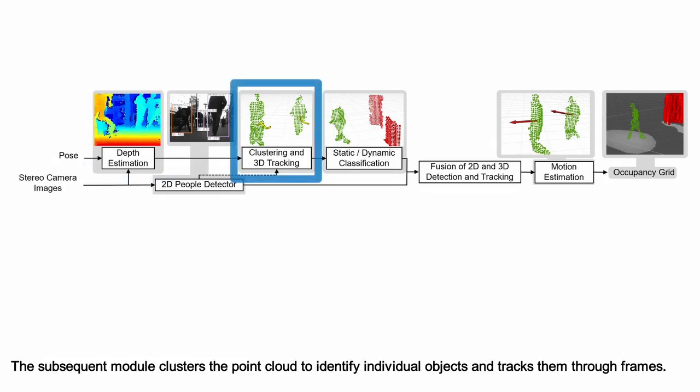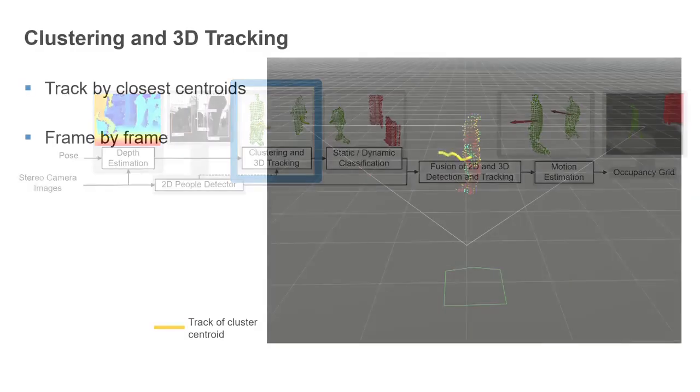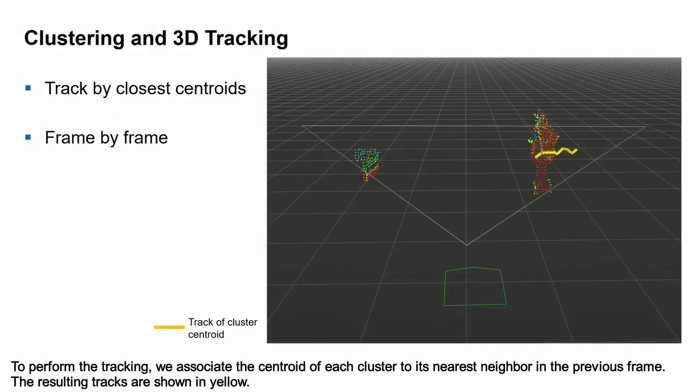The subsequent module clusters the point cloud to identify individual objects and tracks them through frames. To perform the tracking, we associate the centroid of each cluster to its nearest neighbor in the previous frame. The resulting tracks are shown in yellow.